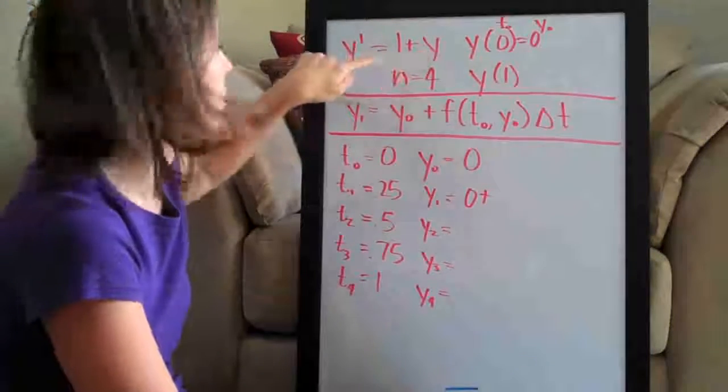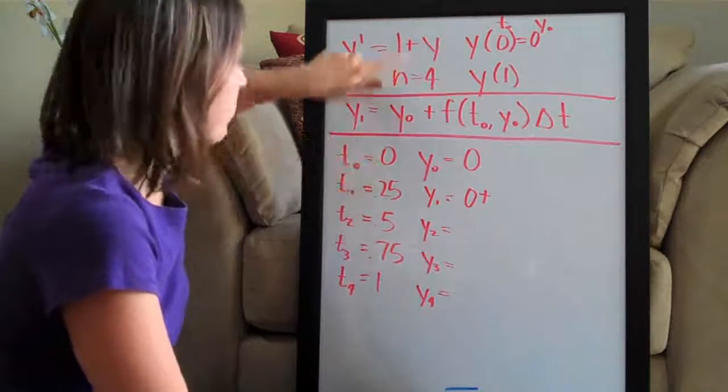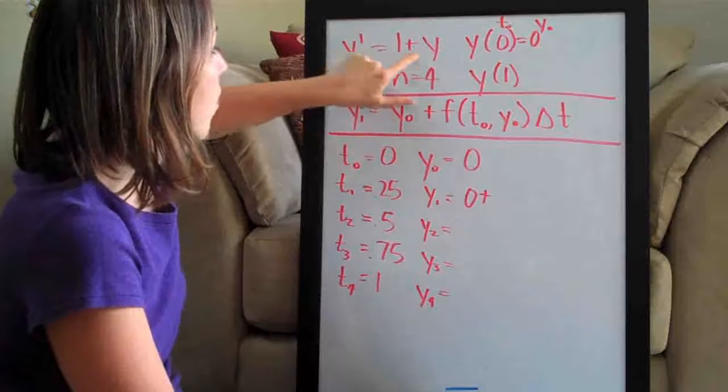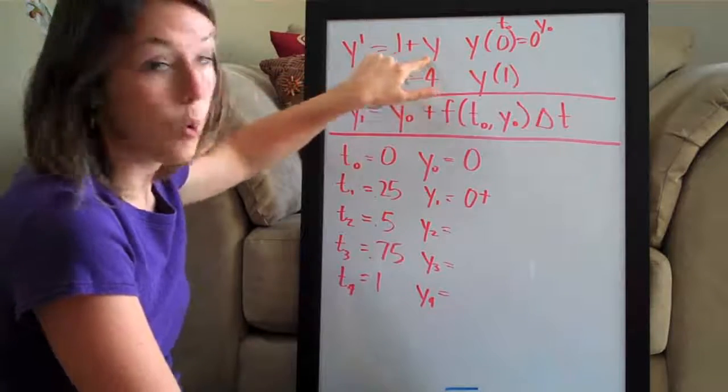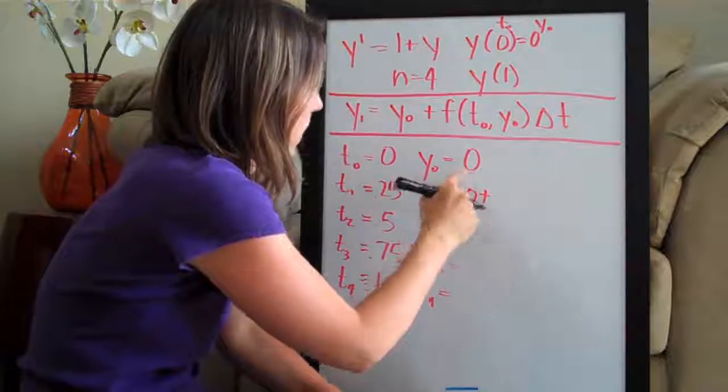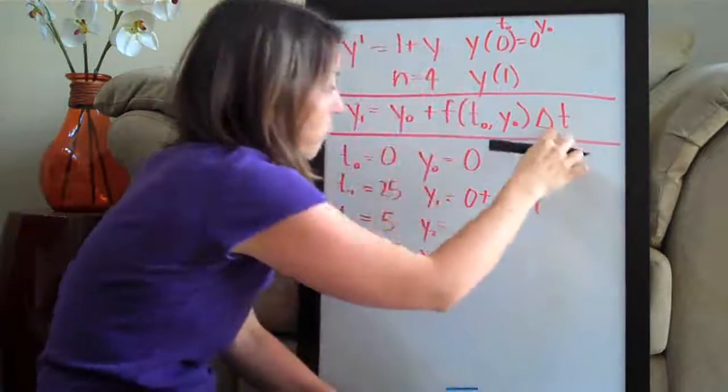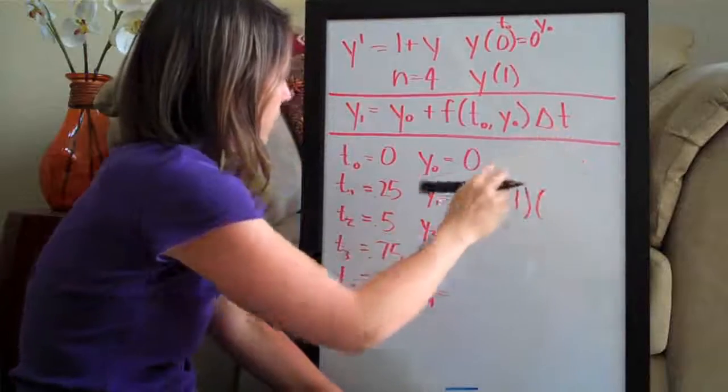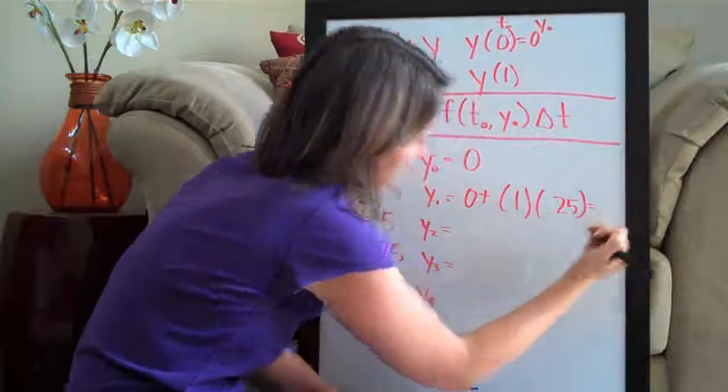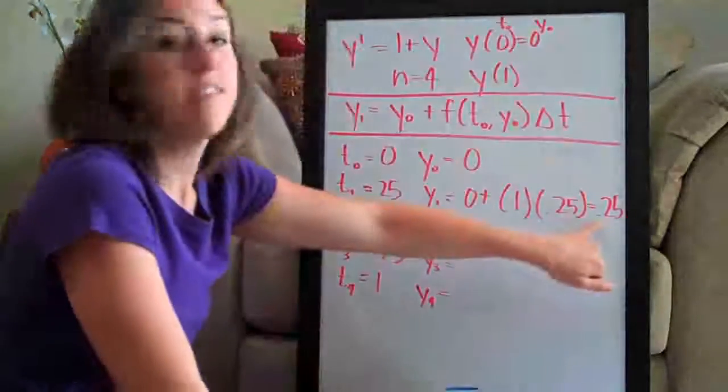So we plug in the point (0, 0). In this case, we have no t in our original function, it's just 1 plus y. So we're not going to end up plugging in 0 for t because we have no t's. So what we are going to do is plug in 0 for y. So we get 1 plus 0, which is 1. So the value of the function at the point (0, 0) is just 1. So we have 1 and then of course we have to multiply times delta t, which of course is 0.25. We solved for it earlier. 0.25 equals 1 times 0.25 is just 0.25. So this is the value of y1.